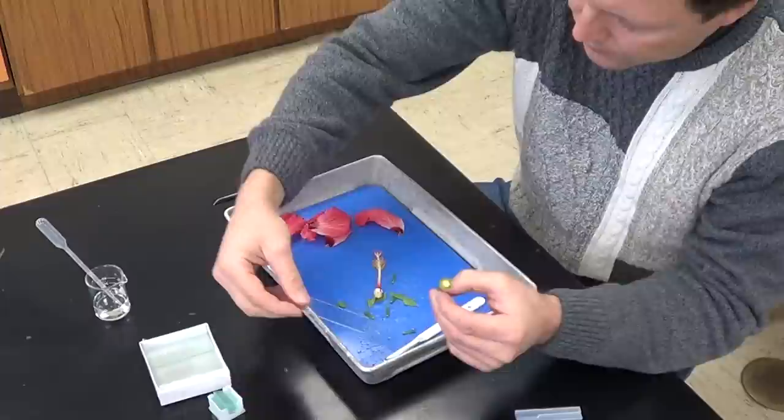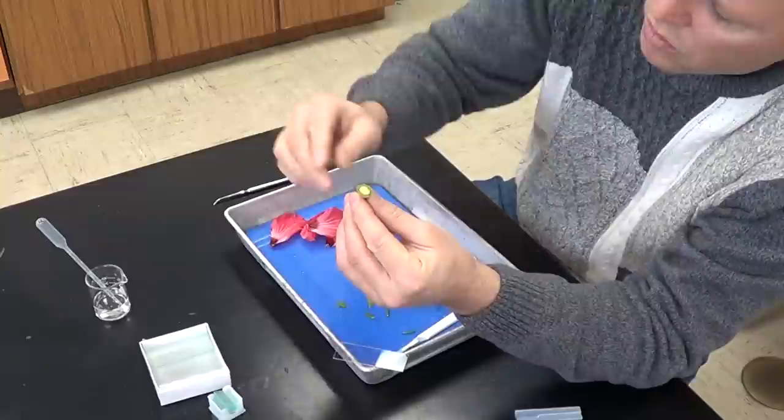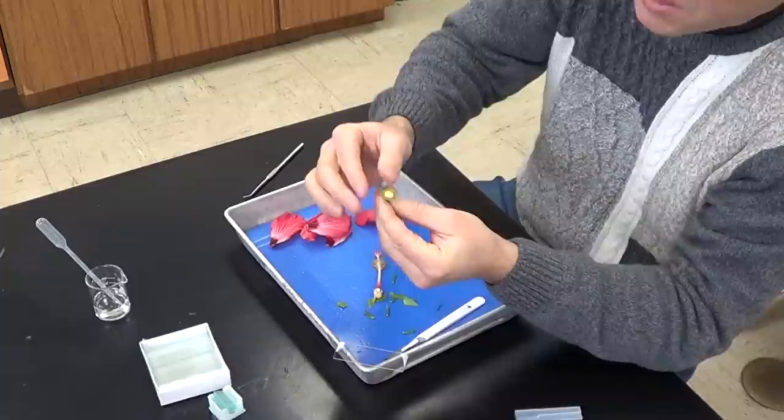Now I'm going to take a clean glass slide. I'm going to put it right here on my tray so the camera can see it. I'm going to give the ovary a little squeeze, and you can see these small white round structures here start to come out. Those are the ovules.